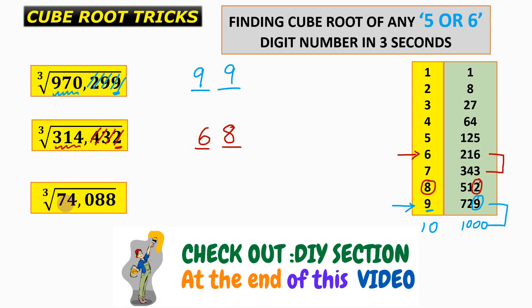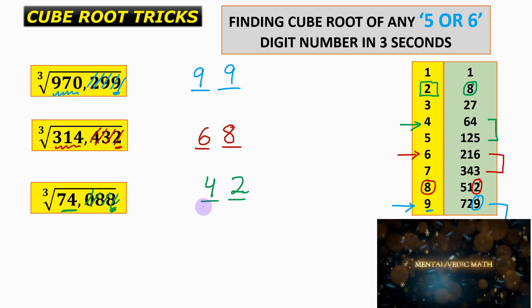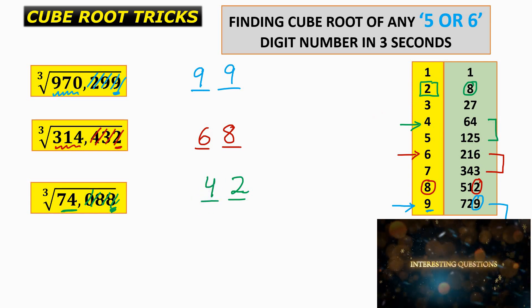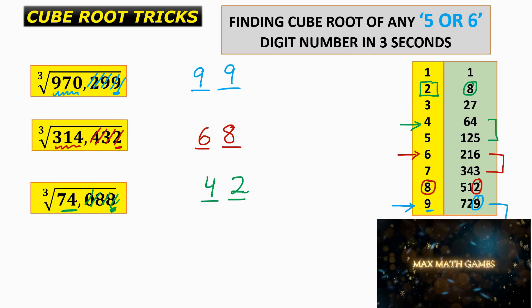For the last question, the cube root of 74,088: the unit digit 8 corresponds to an original unit digit of 2, so we write 2. Discarding the last three digits leaves 74. Since 74 lies between 64 (4³) and 125 (5³), picking the smaller number gives the answer 42. In the next video we will learn how to find the cube root of any 7-digit number.